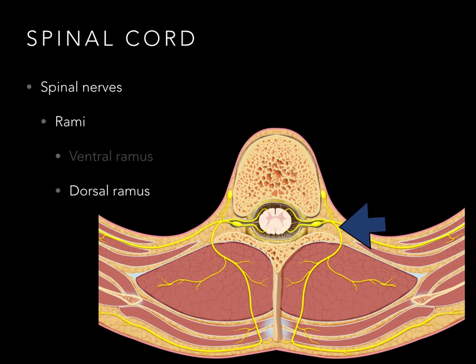The dorsal ramus goes to the skin of the back and to the deep back muscles. It goes to the erector spinae and transversospinalis muscles — also known as the paraspinal muscles, intrinsic back muscles, or true deep back muscles. In addition, the dorsal ramus also goes to the skin of the back to the mid-scapular line.